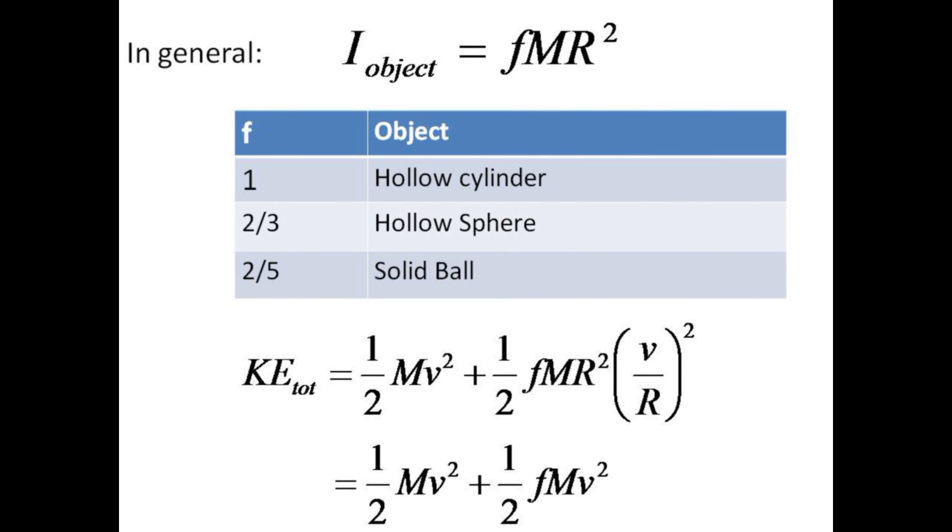An easy way to keep track of these is to let f represent the fraction, one, two-thirds, or two-fifths, depending on the object. Then the total kinetic energy will be one-half mv squared plus one-half f times mv squared, since the r's cancel in the second rotational kinetic energy term.